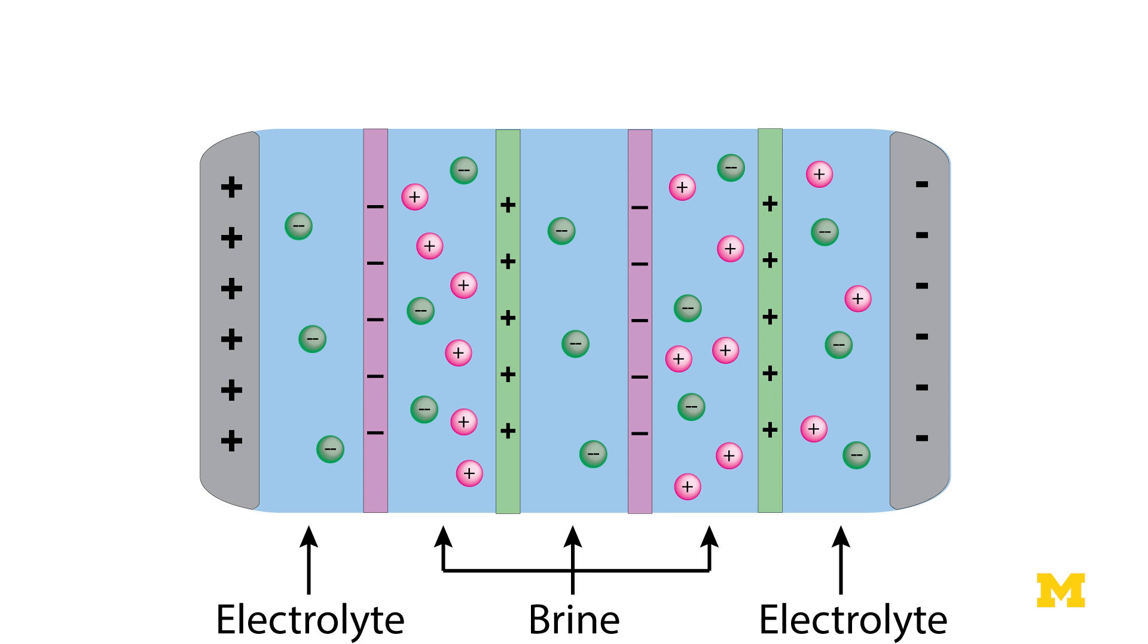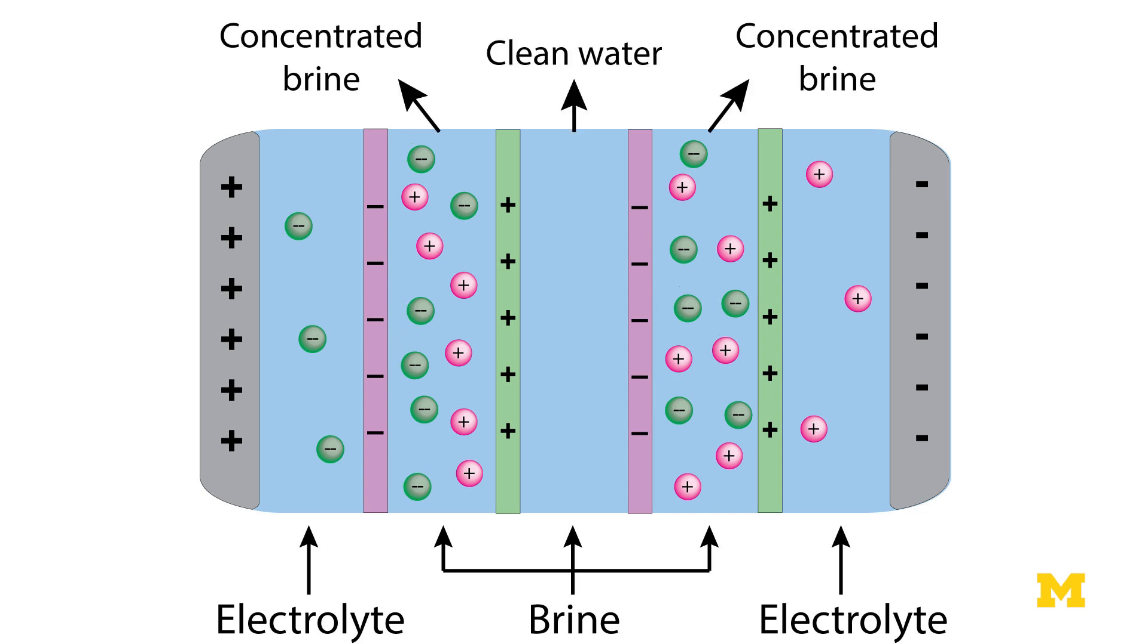The negative ions or the anions can easily go through the positively charged membrane but they'll be blocked by the negatively charged membrane. This leaves behind a stream of purified or desalinated water and also concentrated brine streams.